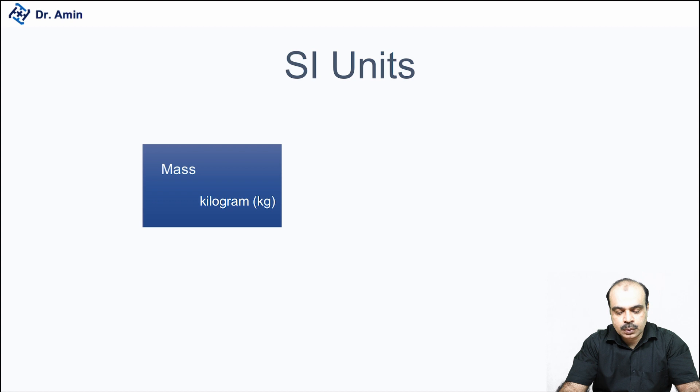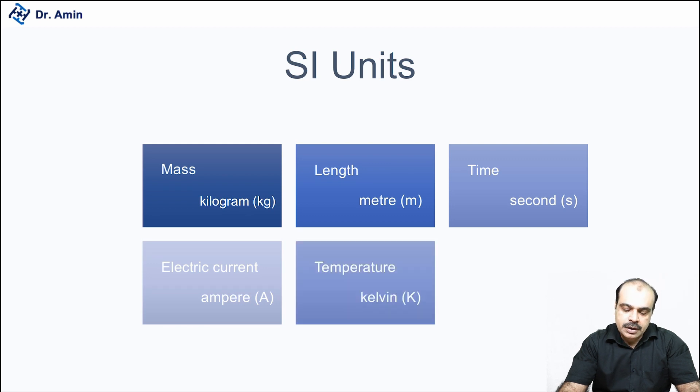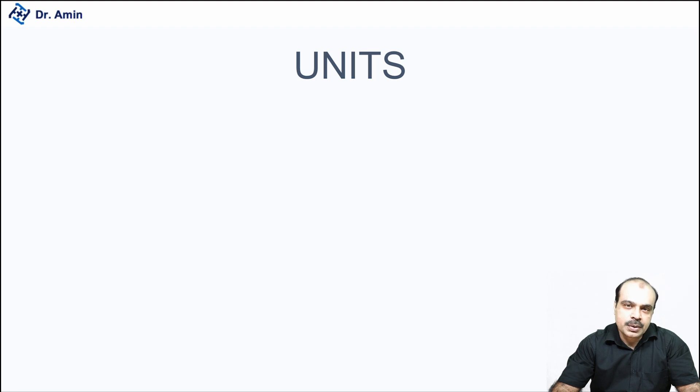In SI units, we have mass, which is measured in kilograms. Then we have length, which is measured in meters. Then we have time, which is measured in seconds. Then we have electric current, which is measured in amperes. Temperature is measured in Kelvin. Here is an important thing: the SI unit of temperature is Kelvin, not centigrade or Fahrenheit which we commonly use. And then we have light intensity or luminous intensity, which has candela as its basic unit of SI. Other units we will be deriving from these units which we have discussed.